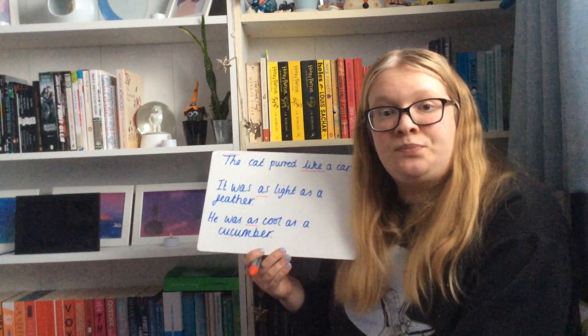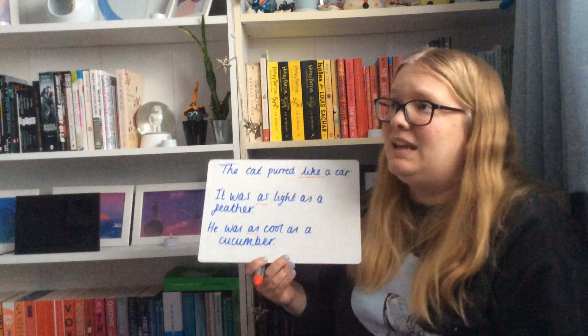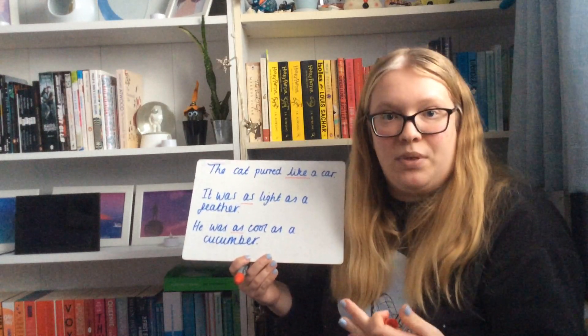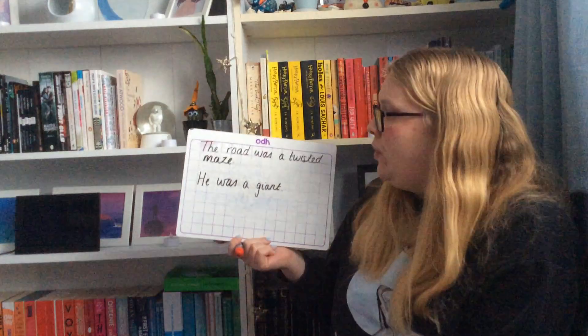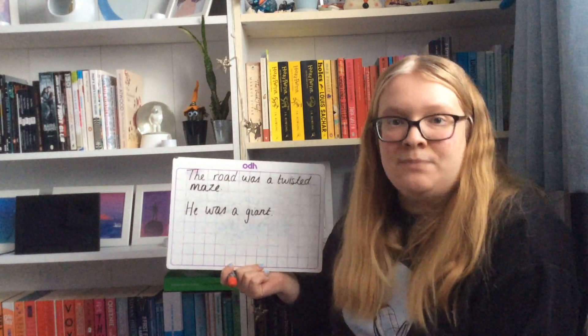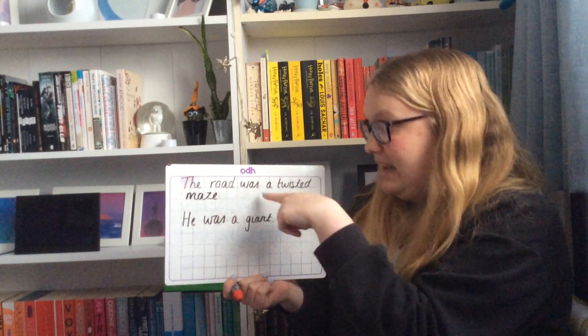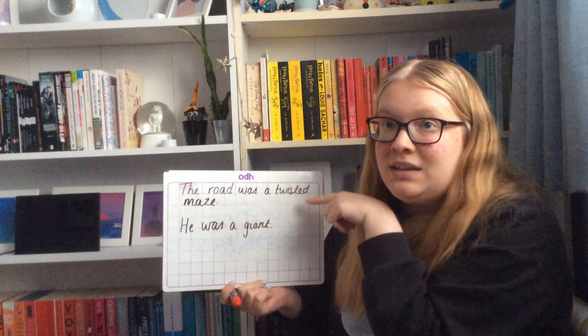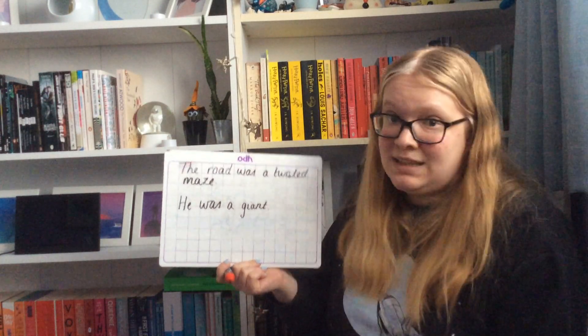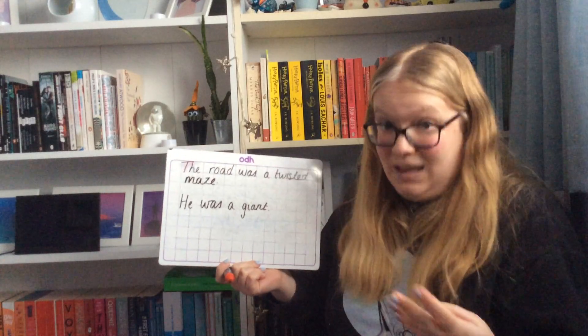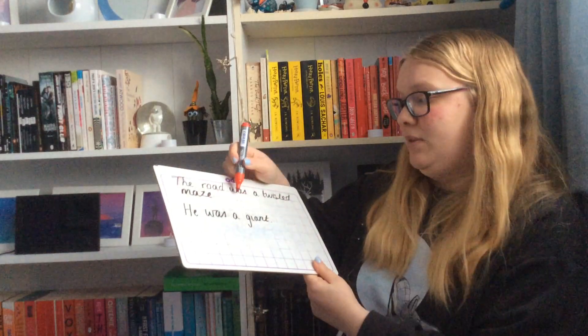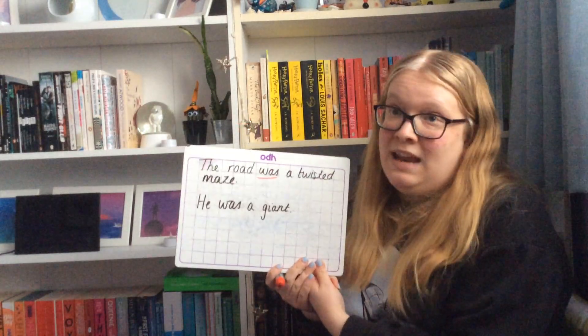A metaphor is saying it is something. It might not be true but it is saying it is something. So, the road was a twisted maze. This author is telling you that the road is a twisted maze. It's not like a maze, it is a maze. Was is our hint word there.